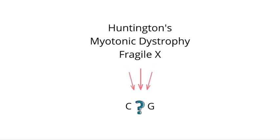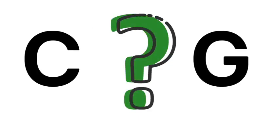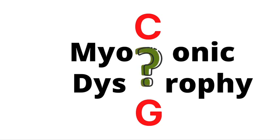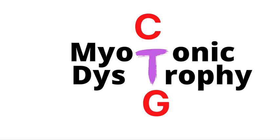You might be wondering: if they all start with C and end with G, how can we distinguish them? Here we see an intersection between the words myotonic and dystrophy and C_G. The missing letter is the fourth letter in both myotonic and dystrophy, which is the letter T. So the trinucleotide repeat in myotonic dystrophy is CTG.